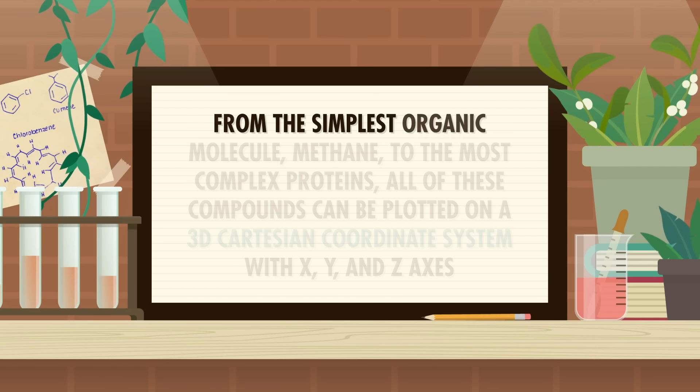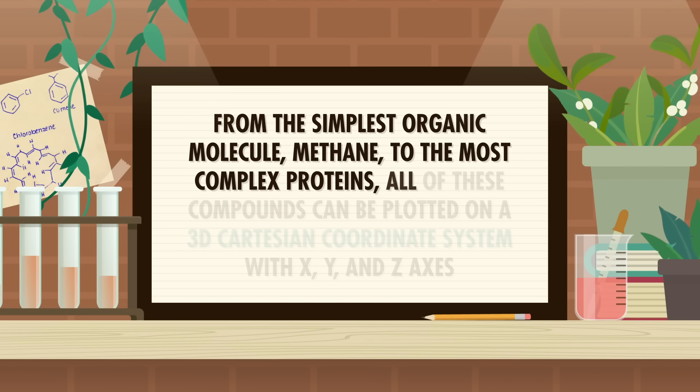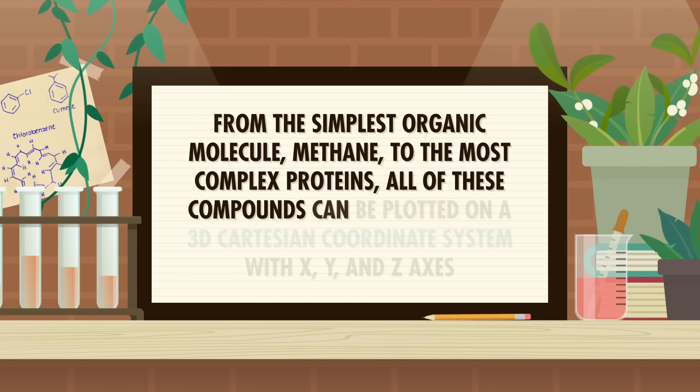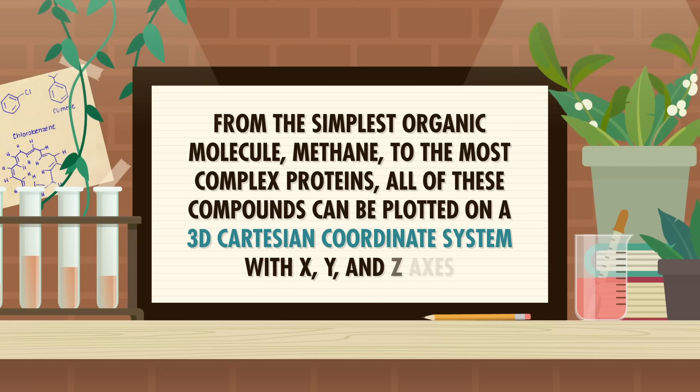From the simplest organic molecule methane to the most complex proteins, all of these compounds can be plotted on a 3D Cartesian coordinate system with x, y, and z axes. By understanding how molecules have 3D shapes, we can better understand how the structure of any molecule affects what it can do. Some compounds fit together like puzzle pieces, and other combinations are like trying to force a square peg into a round hole.